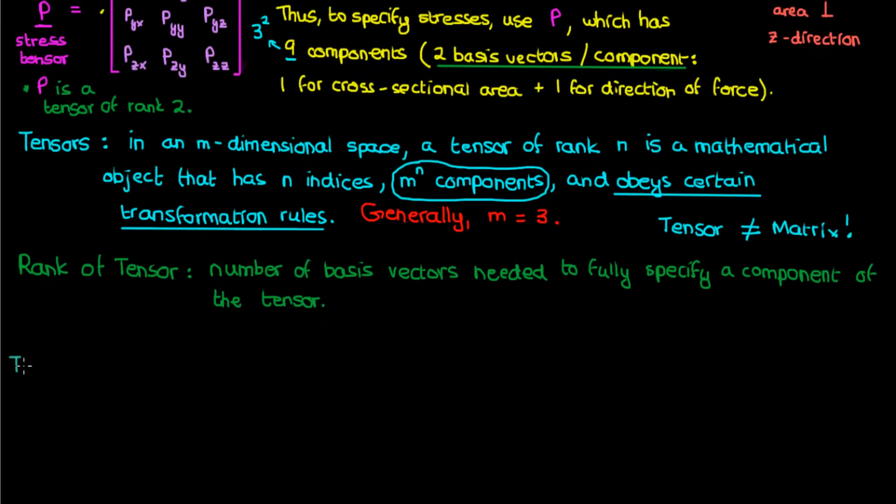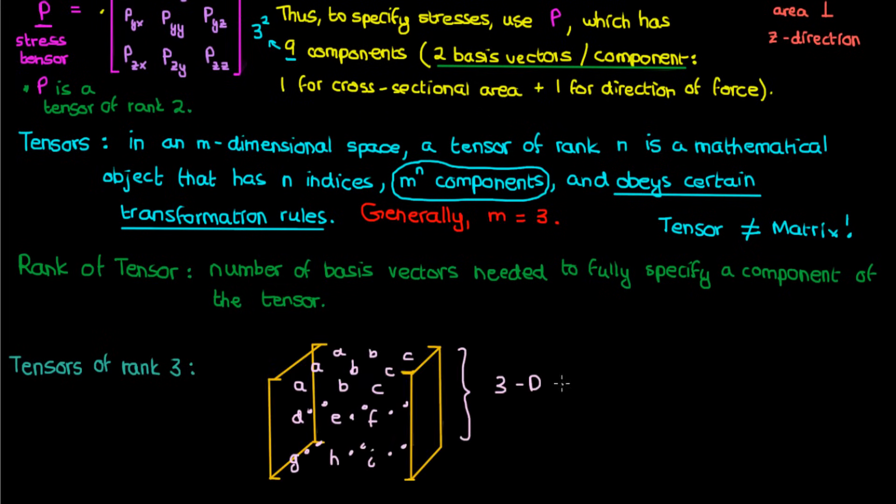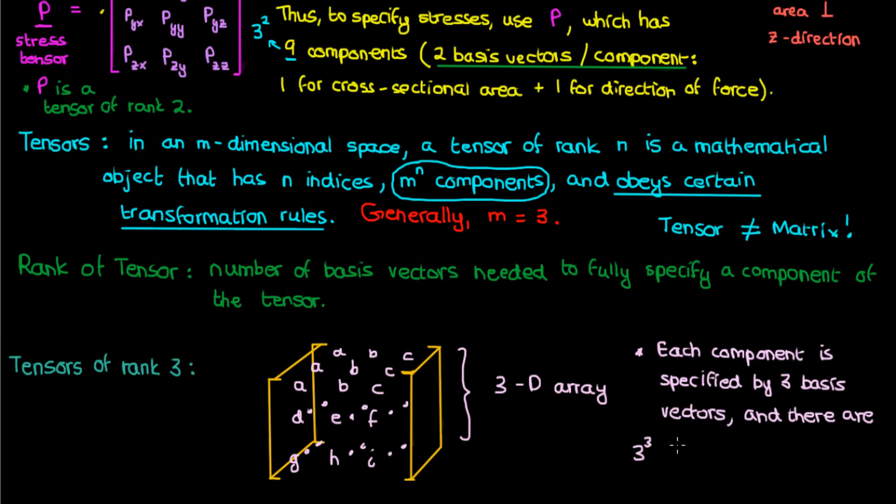Now just for fun, let's also briefly mention tensors of rank three. You can represent tensors of rank three as three-dimensional arrays. 3D arrays are not the same thing as tensors, just like matrices are not the same thing as tensors, but we can use 3D arrays to represent rank three tensors. 3D arrays, by the way, are basically just matrices that are stacked on top of each other. Because this is a tensor of rank three, each component of the tensor is specified by three separate basis vectors. In addition, a tensor of rank three has three to the power three, or 27 components, which again follows the m to the power n component rule in the tensor definition I wrote above.